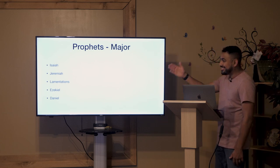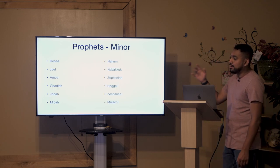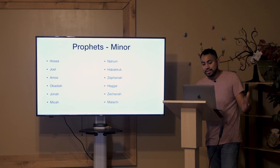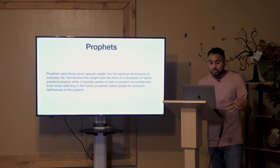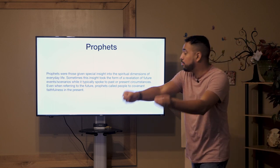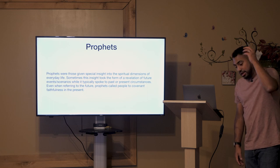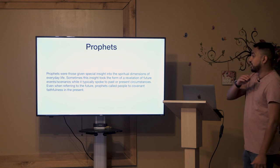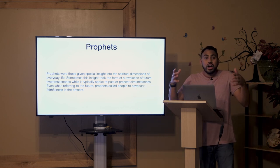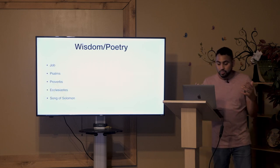The Major Prophets are Isaiah, Jeremiah, Lamentations, Ezekiel, and Daniel. The Minor Prophets are Hosea, Joel, Amos, Obadiah, Jonah, Micah, Nahum, Habakkuk, Zephaniah, Haggai, Zechariah, and Malachi. These prophets gave special insight into what God was wanting to say to the people of that time. Some are talking about historical events; some are talking about future events. But the prophets are specifically speaking to the covenant faithfulness that God has to his people, both past and present.